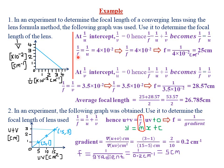Since the aim is to find the focal length, not 1/u, we have 1/f = 4 × 10⁻². Taking reciprocals on both sides, the reciprocal of 1/f is just f, and the reciprocal of 4 × 10⁻² is 1 over 4 × 10⁻², giving us 25 centimeters. So that is the focal length using the 1/u axis.